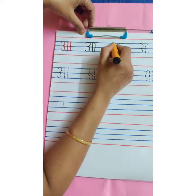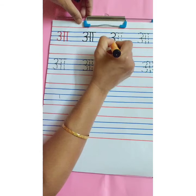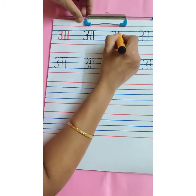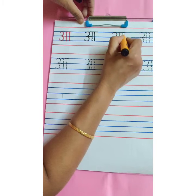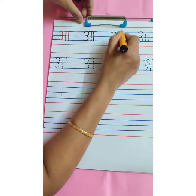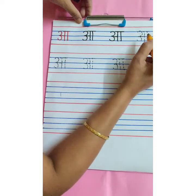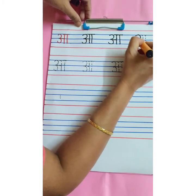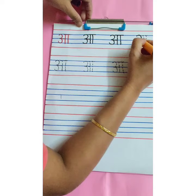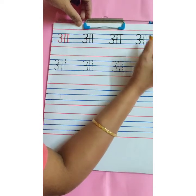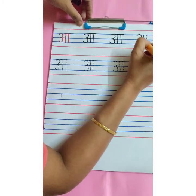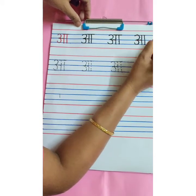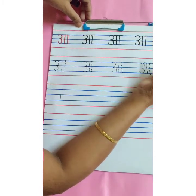One more time: write number 3 within 3 blue lines like this, then sleeping line, then standing line and one more standing line and small sleeping line overhead — A. Start with the first blue line, write number 3, then small sleeping line and then standing line, A, and one more standing line and overhead small sleeping line — A.